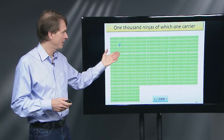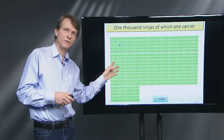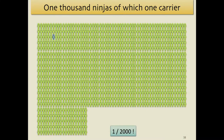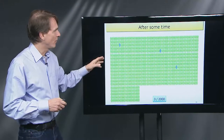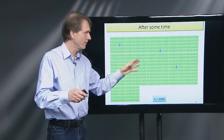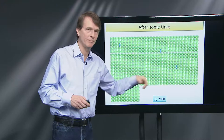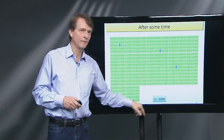In a larger population of 1,000 individuals, that initial allele frequency would be 1 in 2,000. In general, a new mutation in a diploid population has a frequency of 1 over 2N, where N is the population size. After a couple of generations, if the mutation was lucky enough to be passed on to a few people, there might be three people in the population carrying it, giving an allele frequency of 3 out of 2,000.